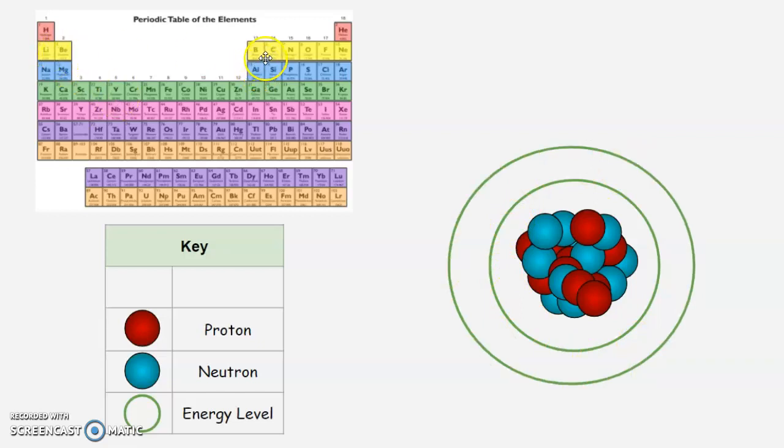Lithium, beryllium, boron, carbon, nitrogen, oxygen, fluorine, and neon will have two circles around it. And there's sodium in the third row here. So it has one, two, three circles around it.